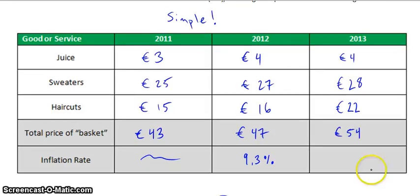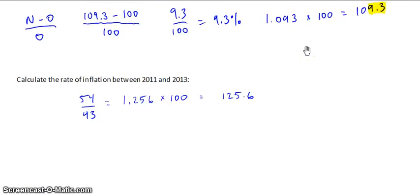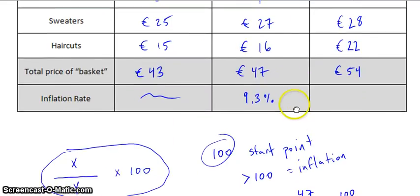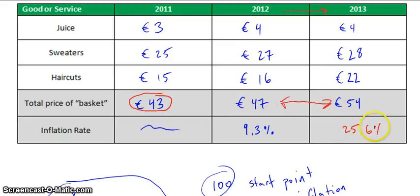So the total price of the basket added up to 54, and when we go through the math, we're going to do 54 divided by 43. That's going to come out to 1.256, and we're going to come out to 125.6, which means that the rate of inflation is 25.6%. Now, if you had something different, it's probably because of this — you need to remember that because we're going between 2011 and 2013, the base year doesn't change. Therefore, this 43 is always going to be the denominator in your formula. You could be asked to go from 2012 to 2013, in which case you would use those two numbers. But here, 25.6% is our correct answer.